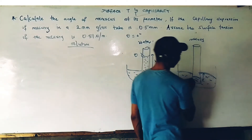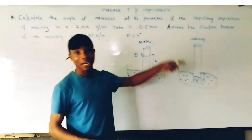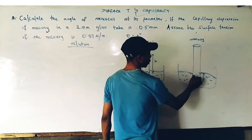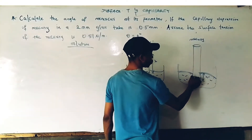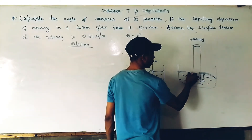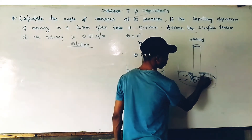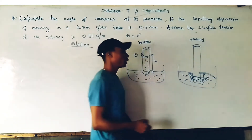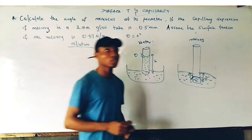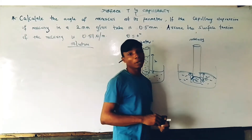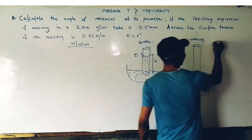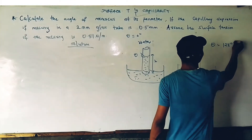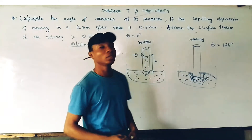There is also an angle of contact between the mercury and the capillary tube, which we call theta. The standard value of theta for mercury is 150 degrees.